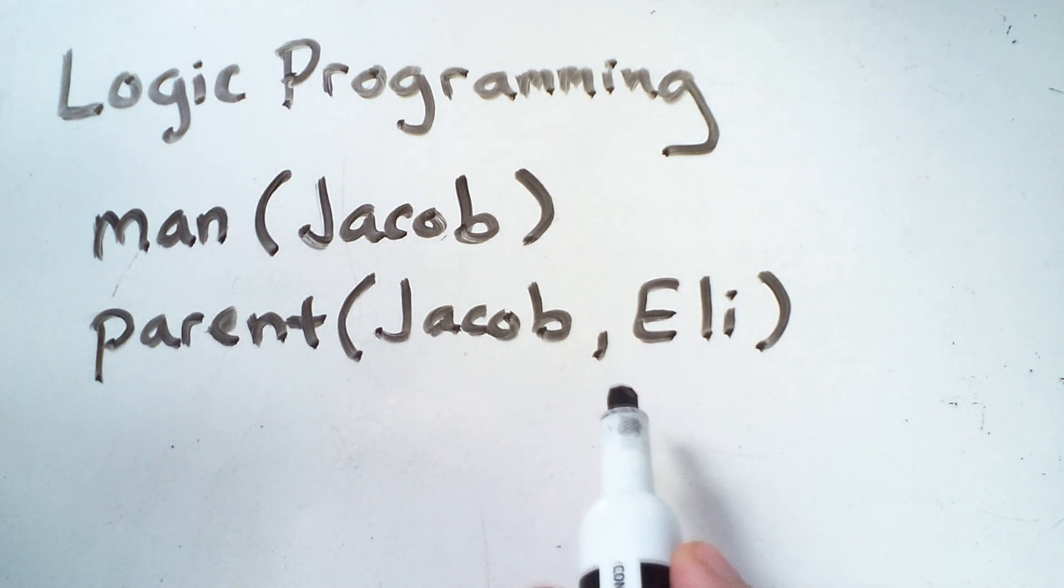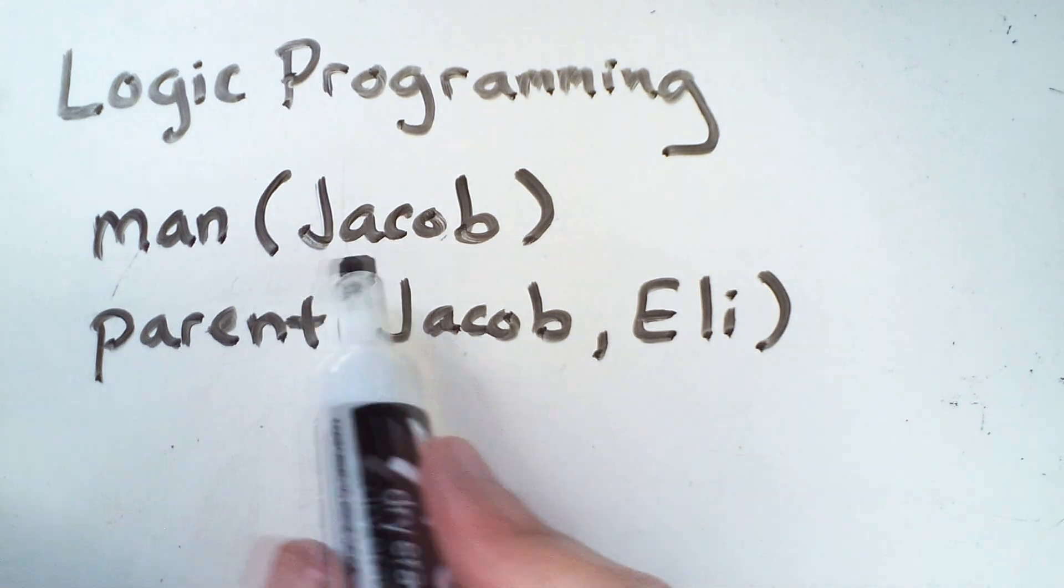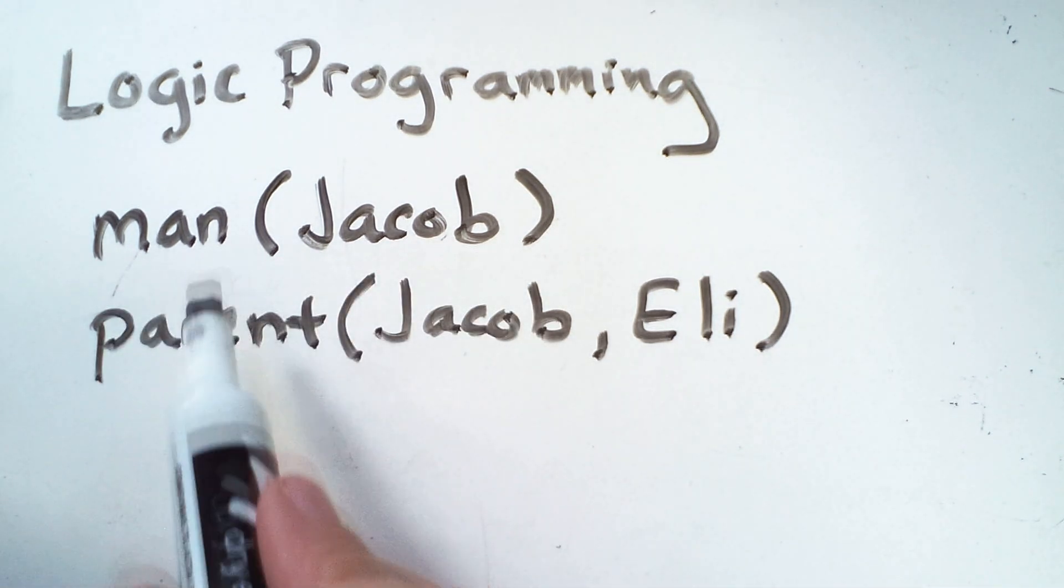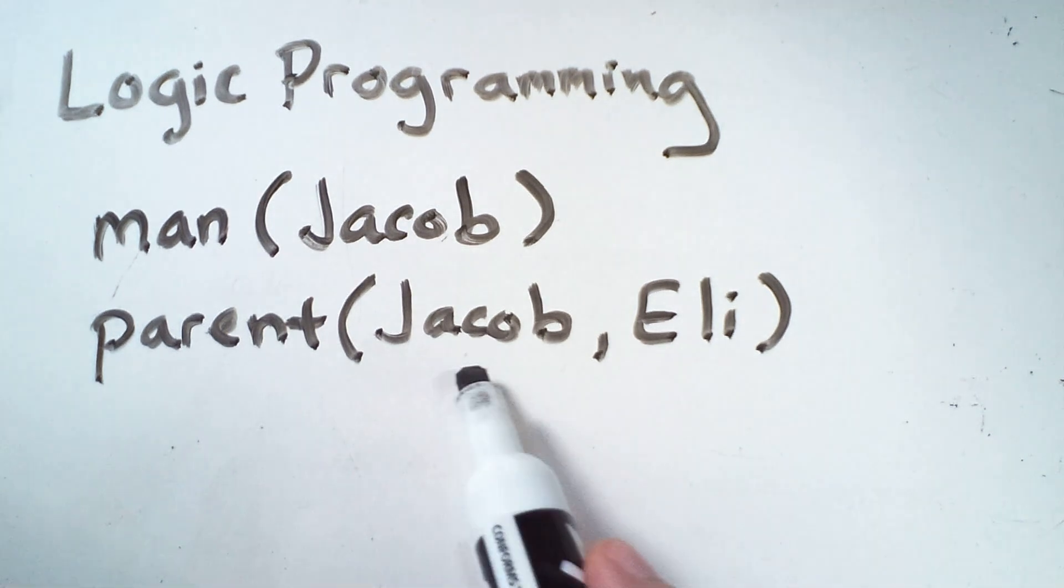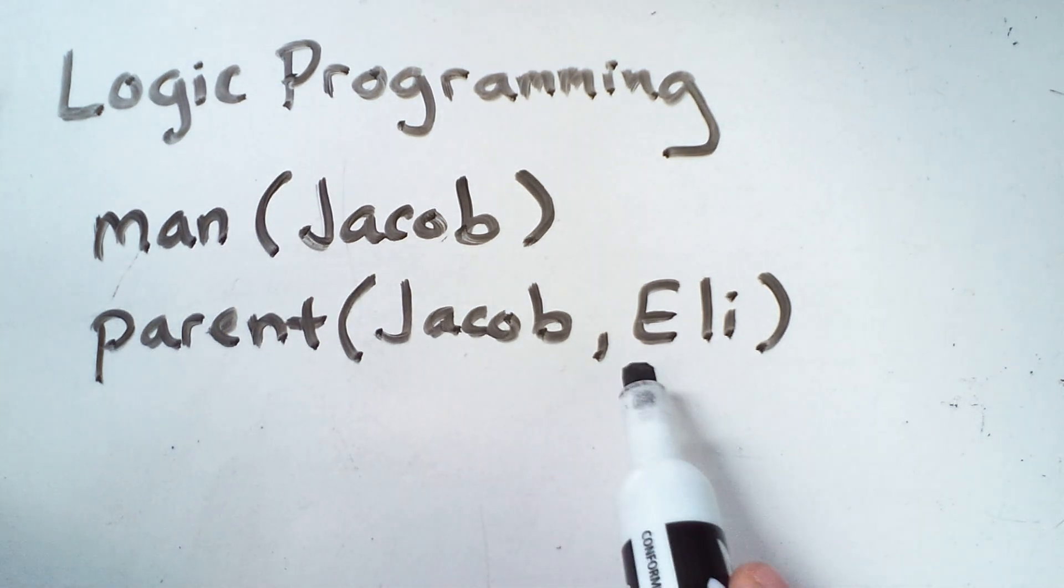And so these are specific values, not really variables. We're saying that a specific individual, Jacob, has the property of man, whatever that is. And the specific individuals, Jacob and Eli, have a relationship, parent, whatever that is.